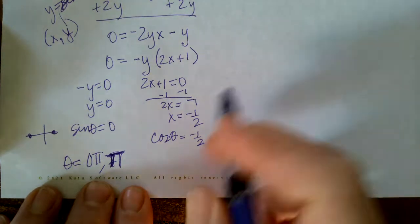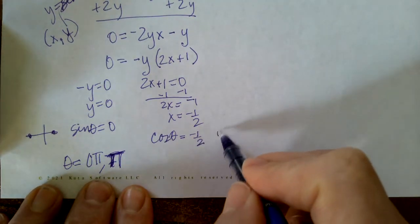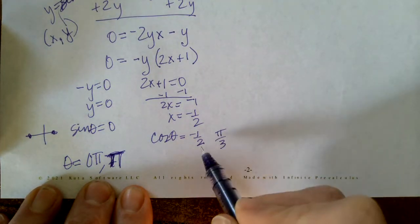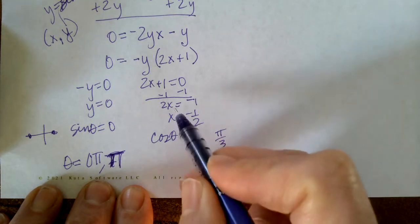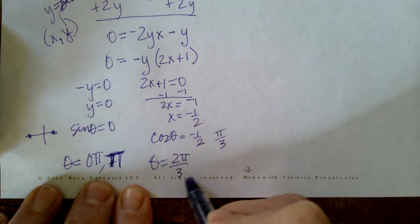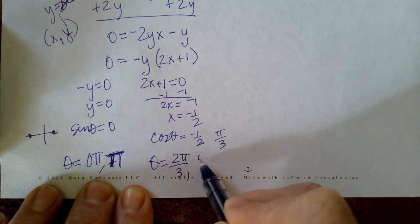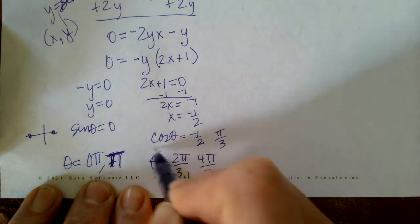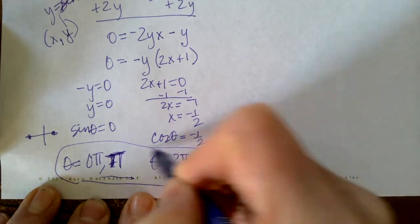And when is the cosine negative one half? Well, that's in the pi over three family and it's negative in the second and the third. So my theta here is two pi over three and four pi over three. So again, there's my big answer for all of those.